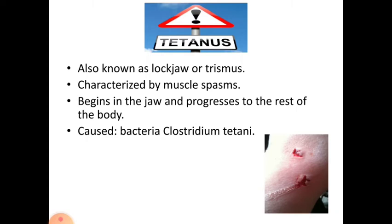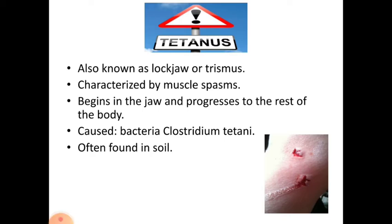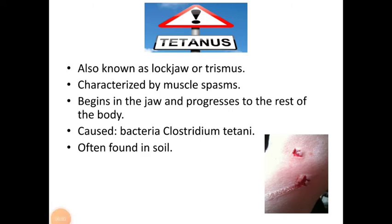The cause of tetanus is the bacteria Clostridium tetani, which is often found in soil and dust. The bacteria present in soil enter the body through an injury, then produce a neurotoxin that causes muscle spasms. These spasms usually last a few minutes each time.